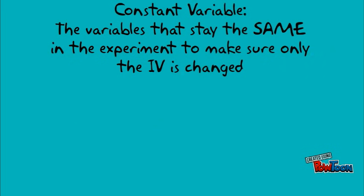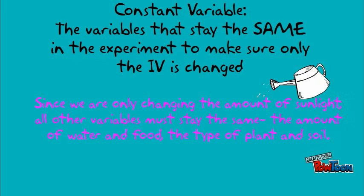Constant variables are the variables that stay the same in the experiment. In our experiment, since we are only changing the amount of sunlight, all other variables must stay the same.